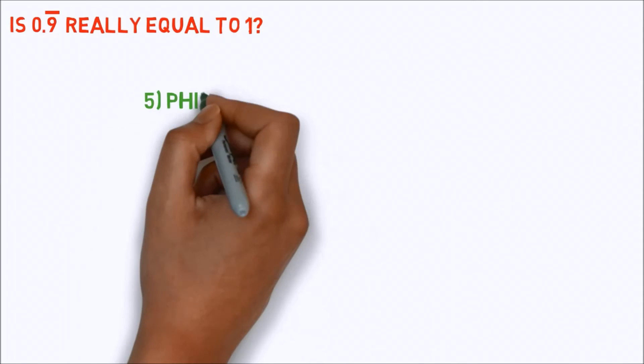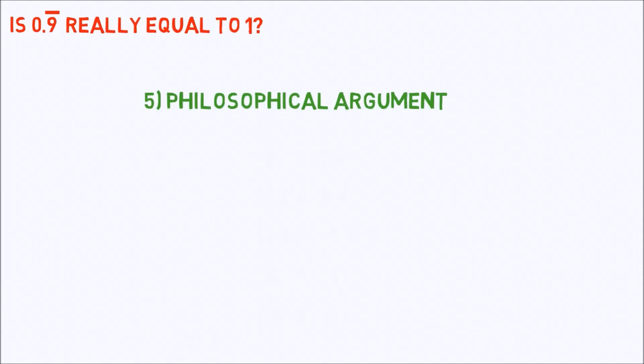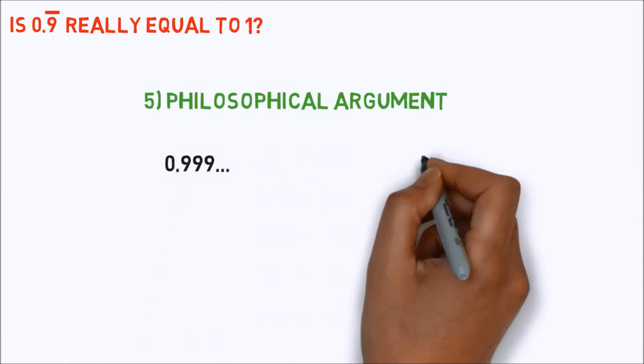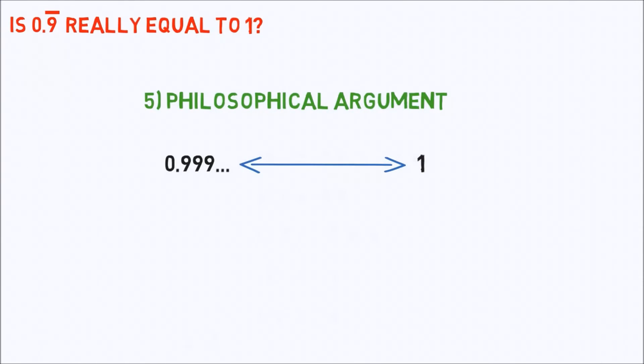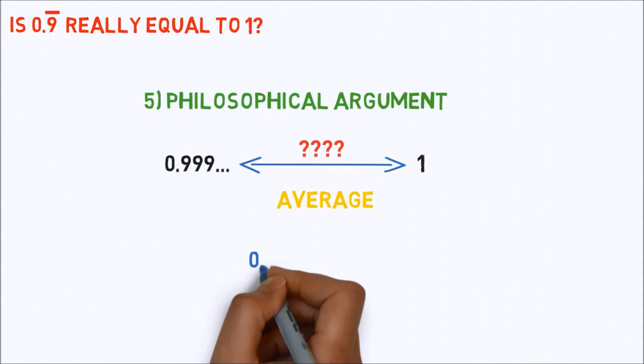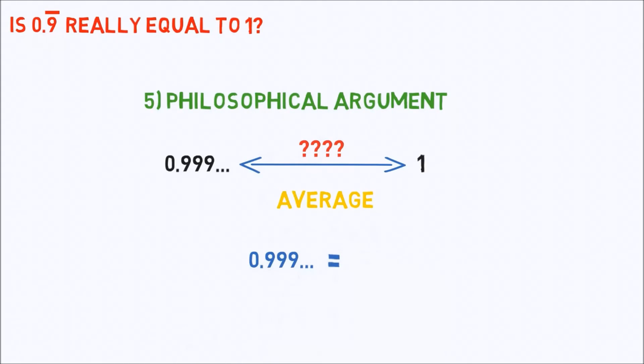Now, argument from philosophy. If two numbers are different, then you can fit another number between them, such as their average. But what number could you possibly fit between 0.9 bar and 1? Which implies that 0.9 bar is equal to 1.